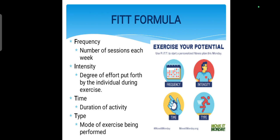Exercise is defined using the FITT formula. F means Frequency — the number of sessions per week, for example 4, 5, or 7 days per week. I means Intensity — the degree of effort you put during exercise; it can be mild, moderate, or severe. T means Time — the duration of your exercise session, which can be 10 minutes, 15 minutes, 30 minutes, or 1 to 3 hours per day.